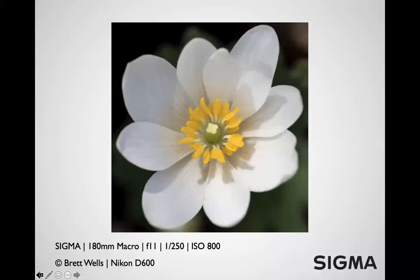This is a blood root — the roots of the flower were actually used for war paint by the Cherokee. They're extremely delicate; the whole flower is maybe three inches across for a big one, and one little gust of wind will blow the petals off.